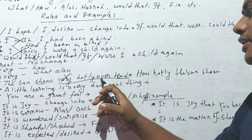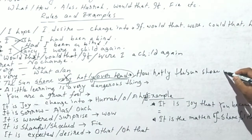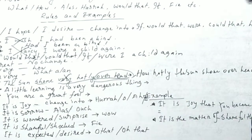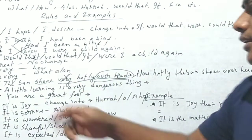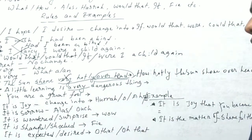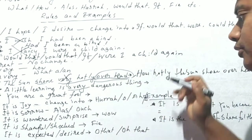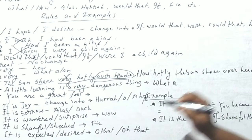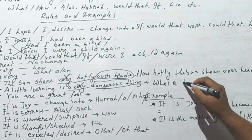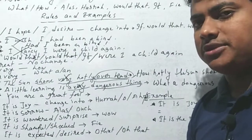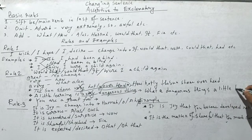Then you take the rest of the extension: 'overhead.' This sentence is changed into an exclamatory: 'How hotly the sun shone overhead!' Another example: 'A little learning is a very dangerous thing.' Here we find 'a very' — this is the rule. 'A very' should be omitted and replaced with 'what a,' because when we find an article we use 'what a.' Then we take the object 'dangerous thing,' then we take the subject and verb 'a little learning is.'